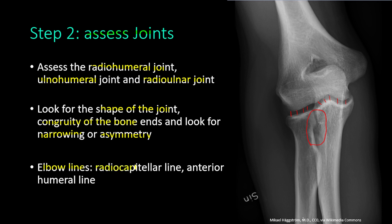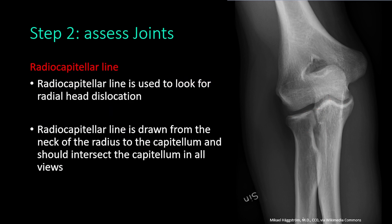We also check the elbow lines. The first is the radio-capitellar line, which is used to look for radial head dislocation. It is drawn from the neck of the radius to the capitellum and should intersect the capitellum in all views. On this AP x-ray, drawing from the radial neck toward the capitellum, we can see it intersects normally.